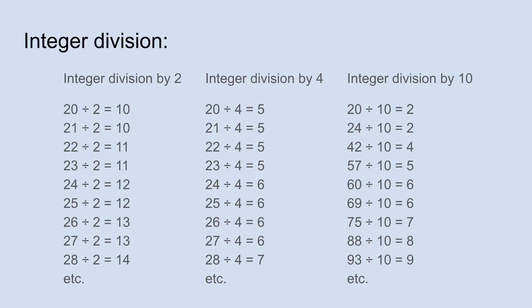So in this case, 20 divided by 10 is 2 obviously, but so is 24 divided by 10. 42 divided by 10, we just ignore the 2, and we get 4. 57 divided by 10, similarly we get 5. And so integer division by 10 is very straightforward.